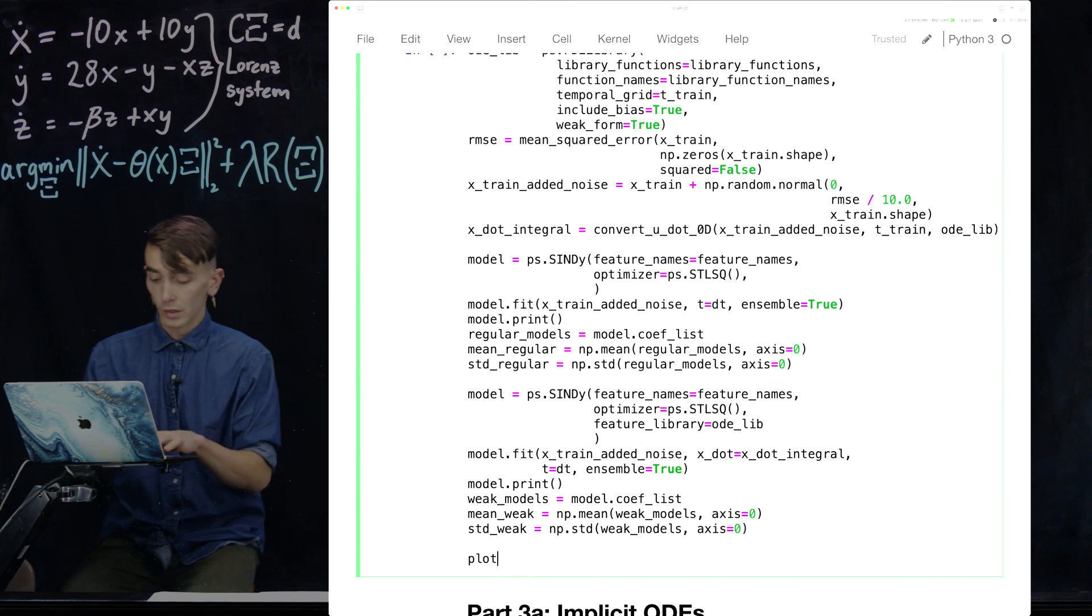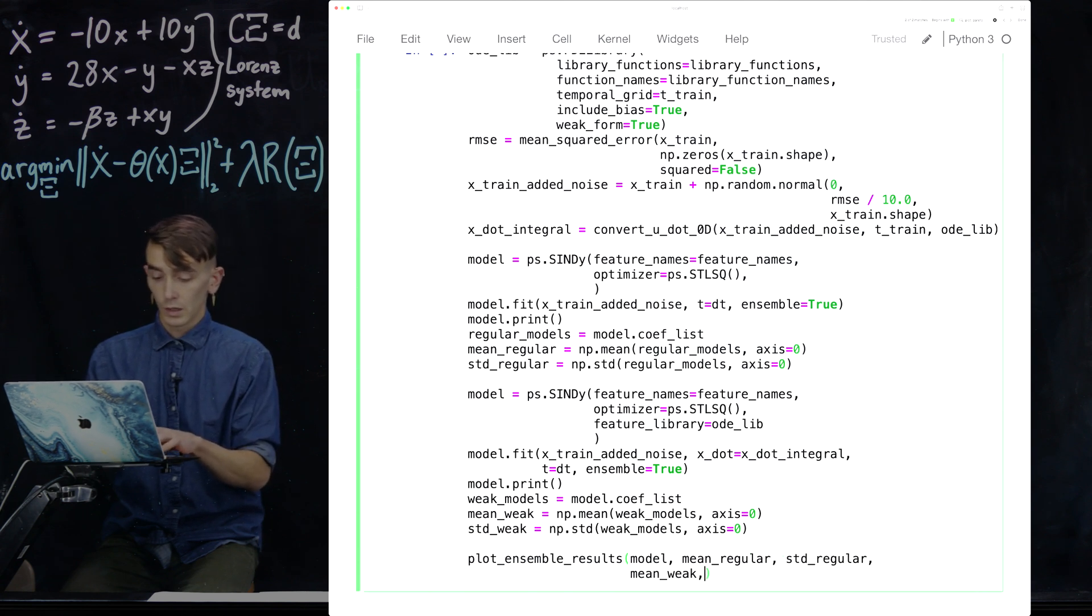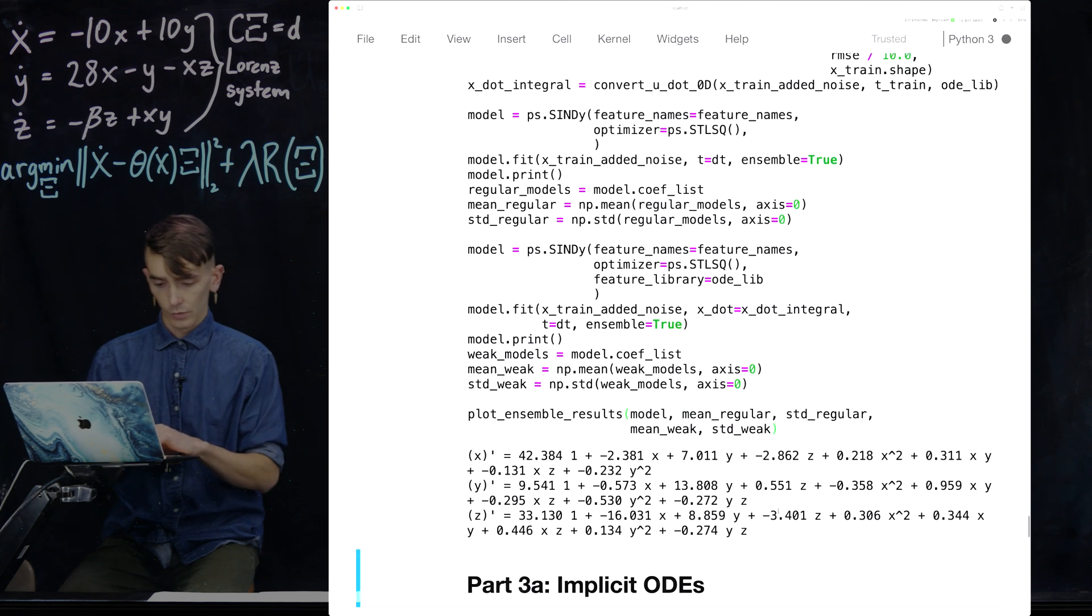And now, we're just gonna type plot ensemble results, which is that function we used earlier in the videos. So this is mean regular, standard deviation regular, mean weak, and standard deviation weak. Hopefully, that will run.